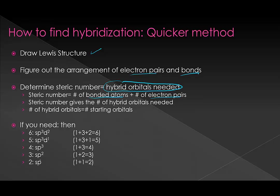If you need 2 hybrid orbitals, you need sp hybridization. If you need 3, you need sp2. If you need 4, you need sp3. If you need 5, you need sp3d. If you need 6, you need sp3d2. You can count up the orbitals: for sp, you have an s and a p, so 1 + 1 = 2. For sp3d2, you have s, three p's, and two d's — they add up to 6.